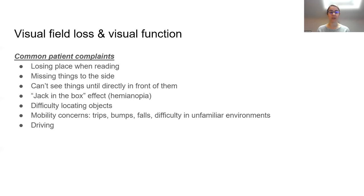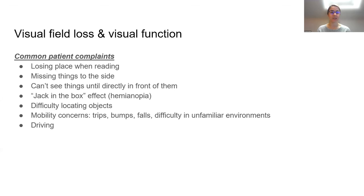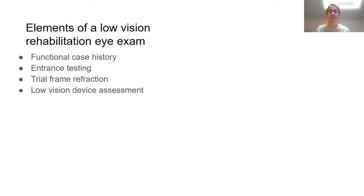Patients might report difficulty localizing objects in their environment — if they drop something, it's difficult to find. They also might report difficulty with mobility, more frequent trips or bumping into things, or even falls related to not seeing things in their environment. Driving can also be a significant concern, as many states in America do not allow patients to drive if they have significant field loss. These functional complaints are most often elicited during the functional case history portion of a low vision exam.